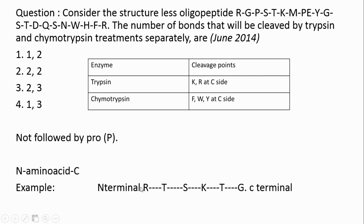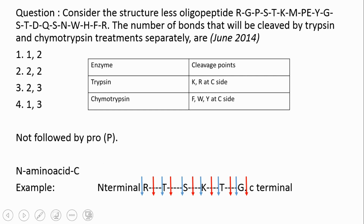The blue arrows represent the N-terminal of each particular amino acid, and the red arrows represent the C-terminal. So when I say trypsin cleaves at the C-terminal, it will act on the C-side and cleave that bond — it will not cleave the bond prior to K, but will cleave the bond which is present after K.